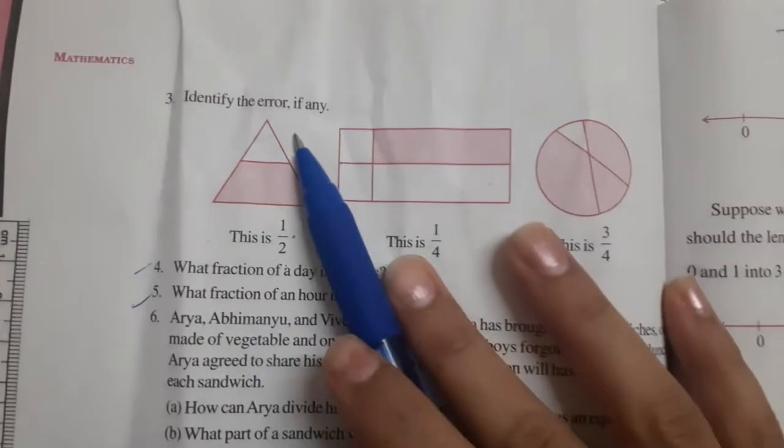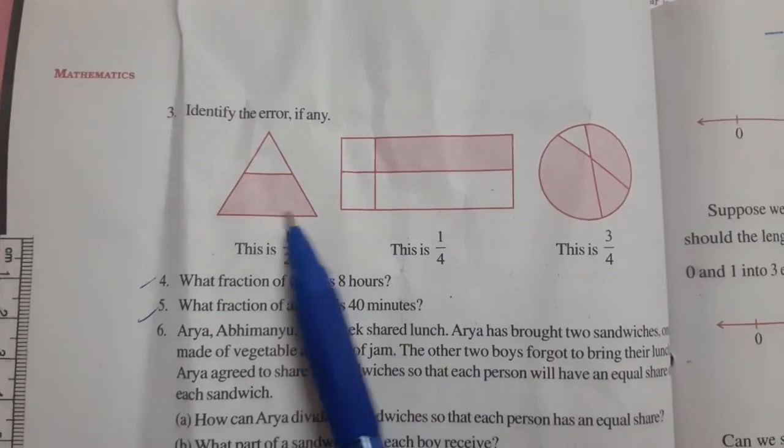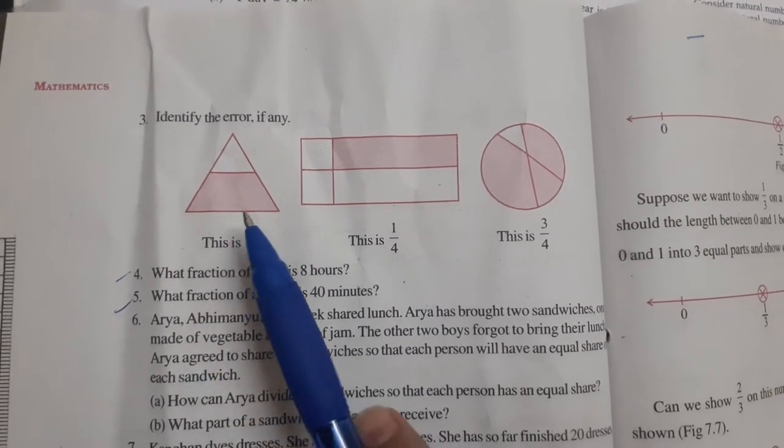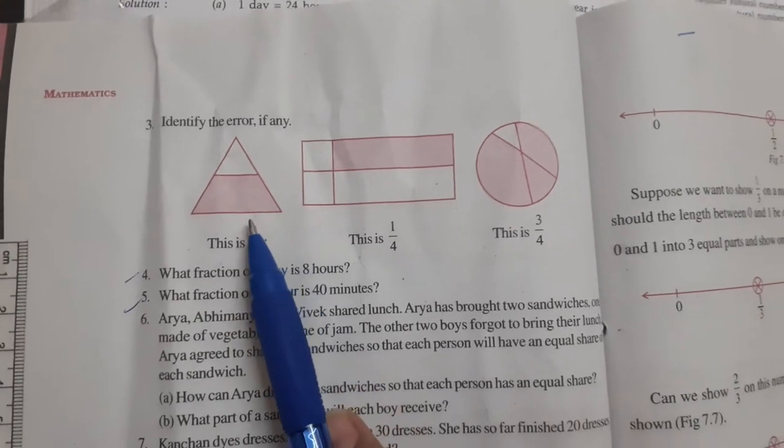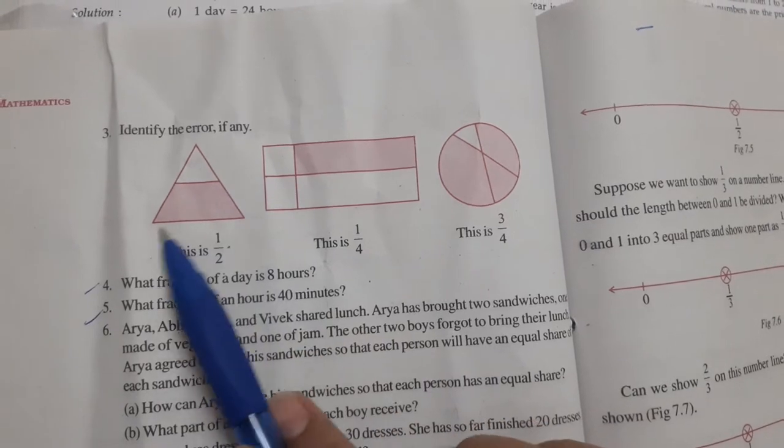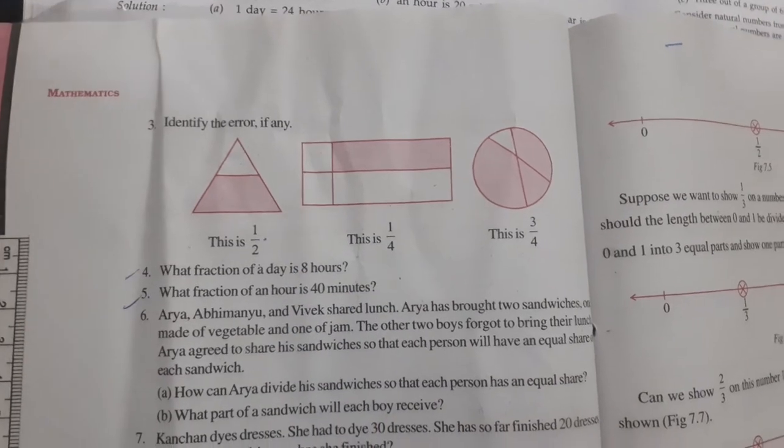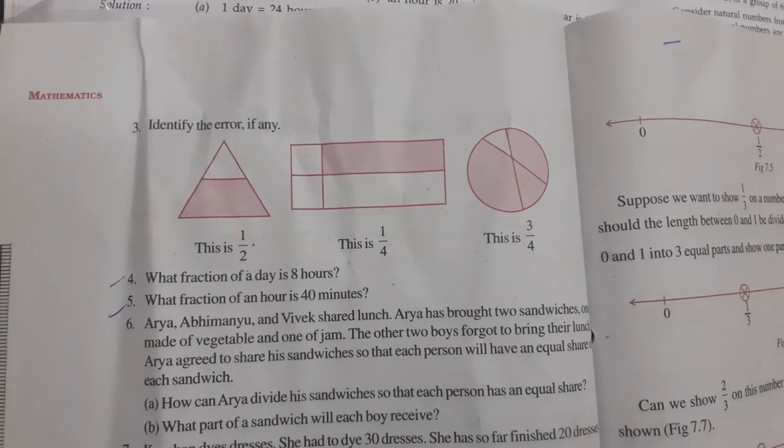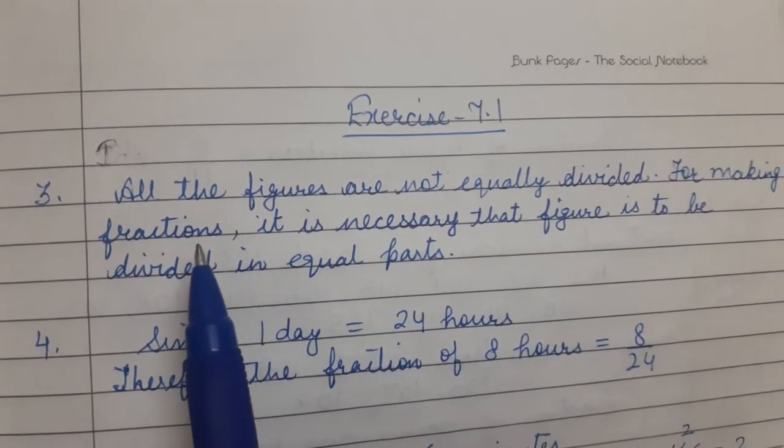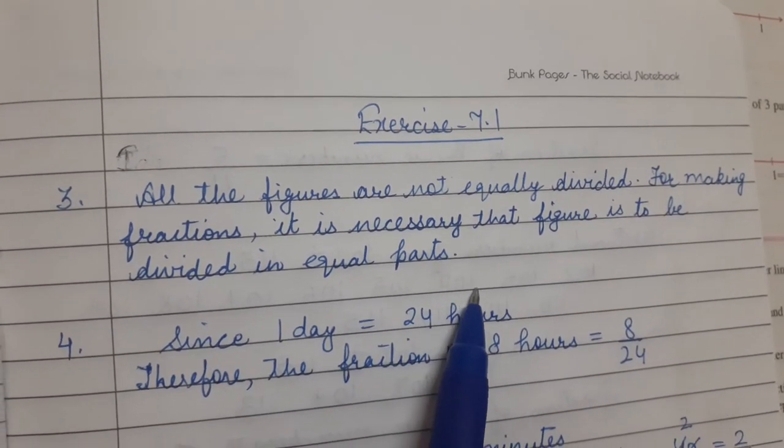Third, identify the error if any. See these figures. First of all, these figures are not equally divided. This is the shape of triangle, this is the shape of trapezium. That means these figures are not equally divided. So identify the error. The first error is this. So the error is all the figures are not equally divided. And for making fractions, it is necessary that figure is to be divided in equal parts. Equal parts, for making any fraction, having equal parts is necessary.